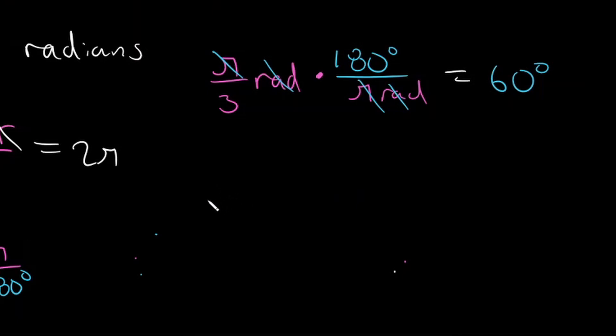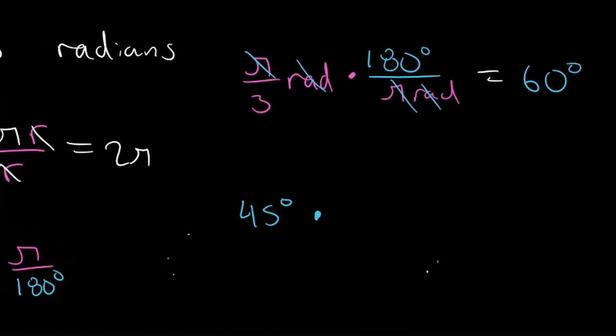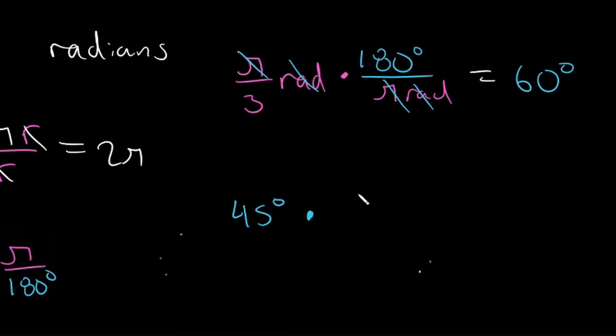Let's do another one, but this time from degrees to radians. If we have 45 degrees and we need to convert that to radians, then we would use our conversion factor pi over 180. So that way, our degrees will cancel and we'll be left with radians. So let's write that. Pi over 180 degrees, pi radians.